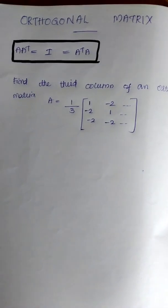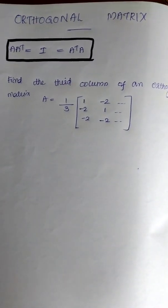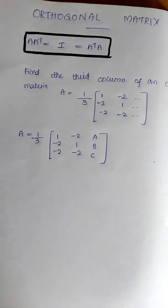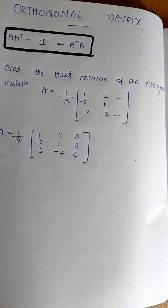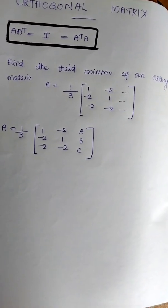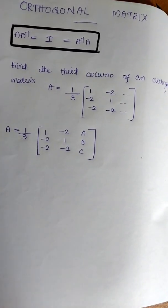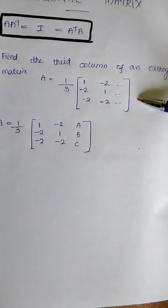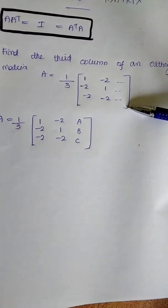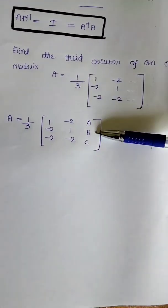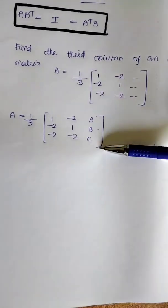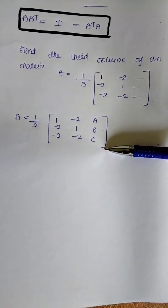There is another type of problem. I will tell you how to solve this. Find the third column of an orthogonal matrix A. This column is not the third column — we will find it. I will find the third column. For example, the third column is A, B, C, and we will find those values.